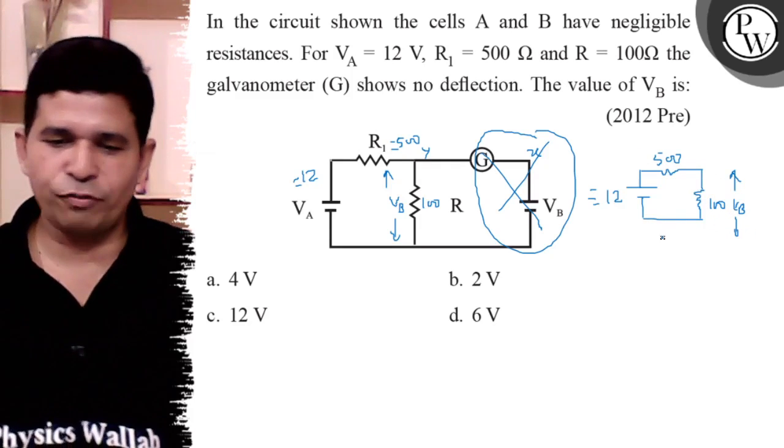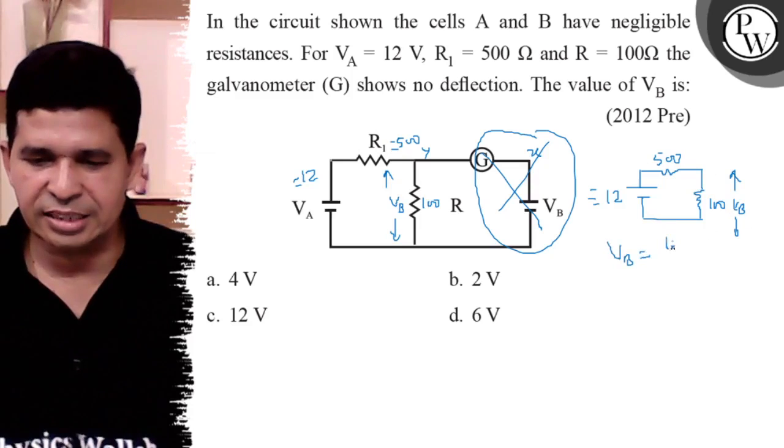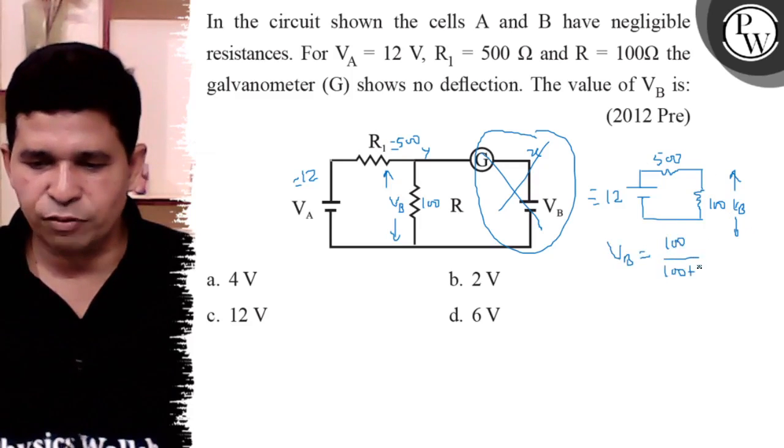So the value of VB is 100 upon (100 plus 500).